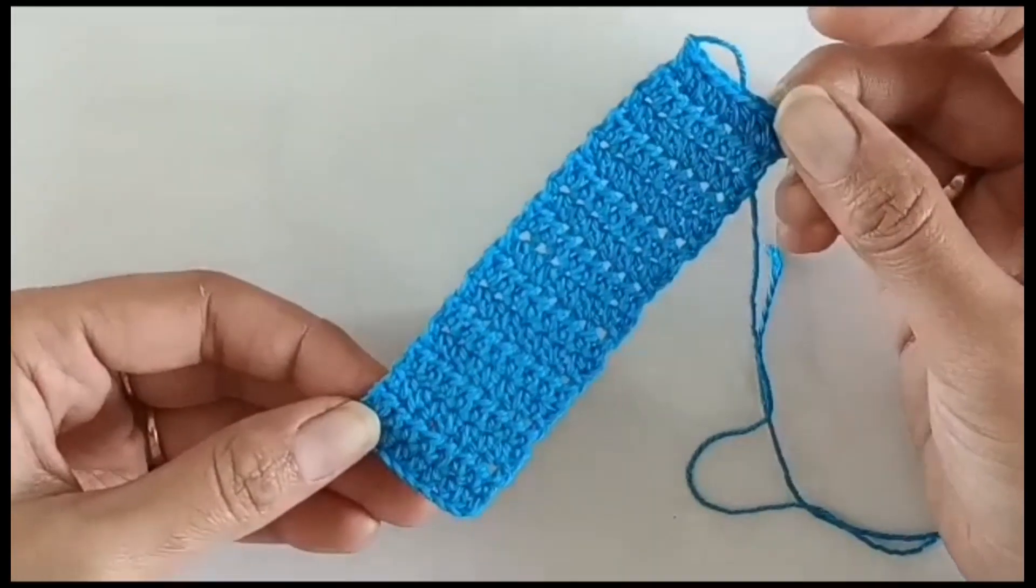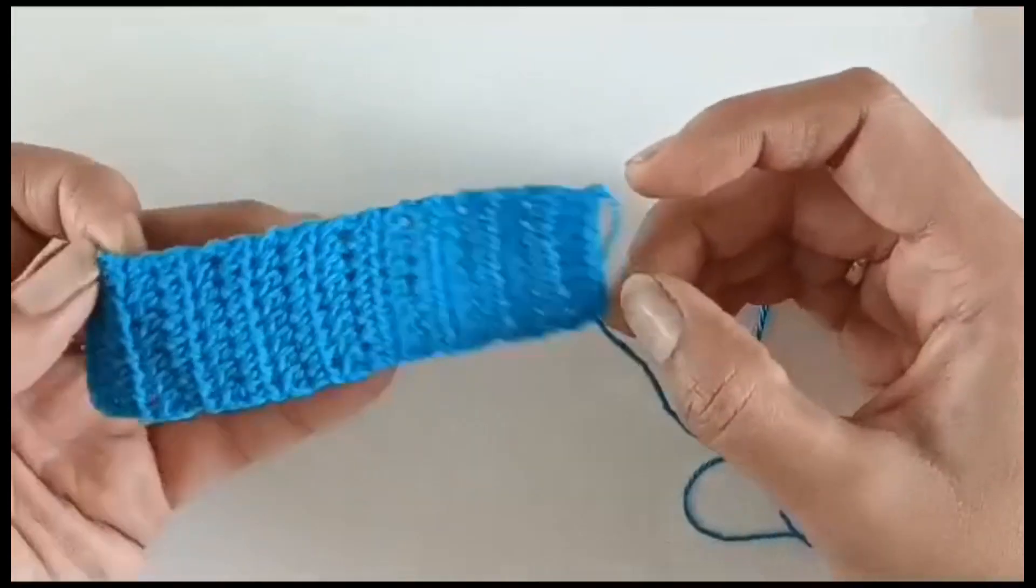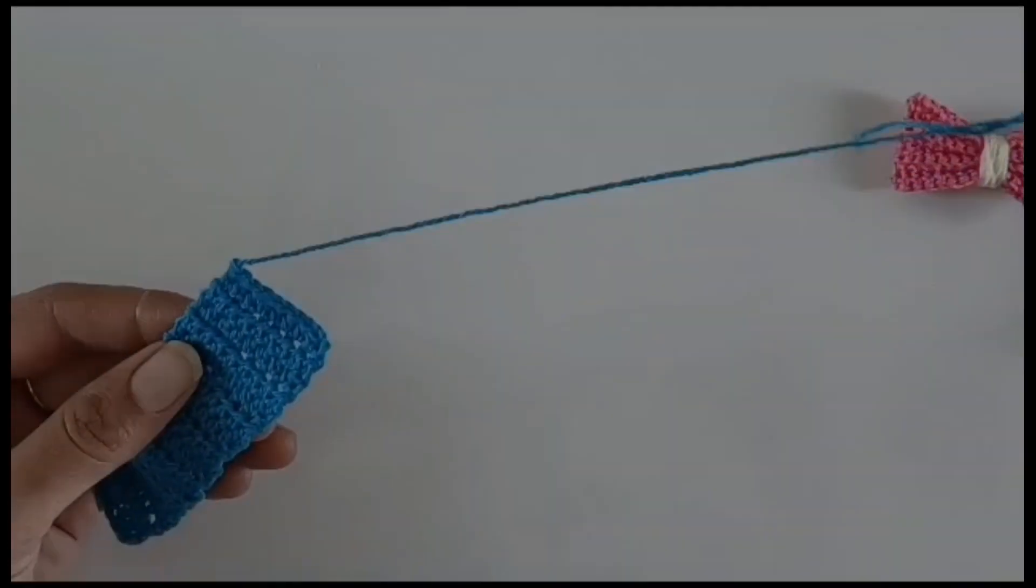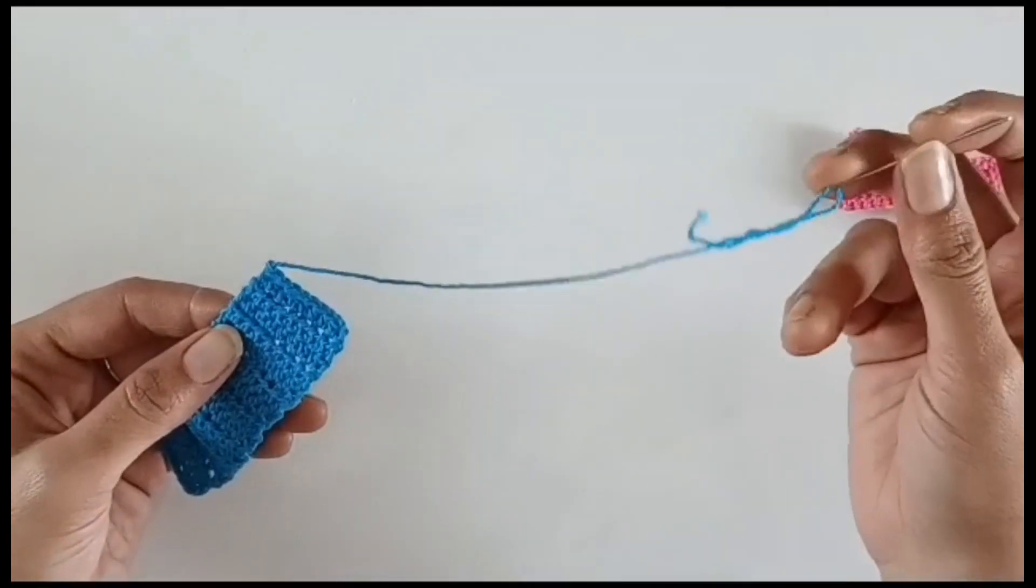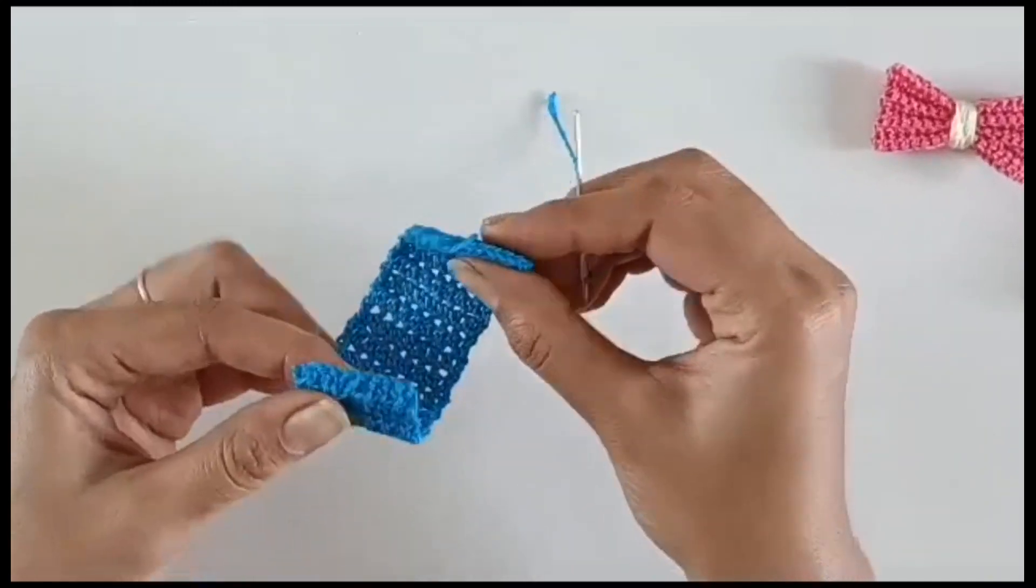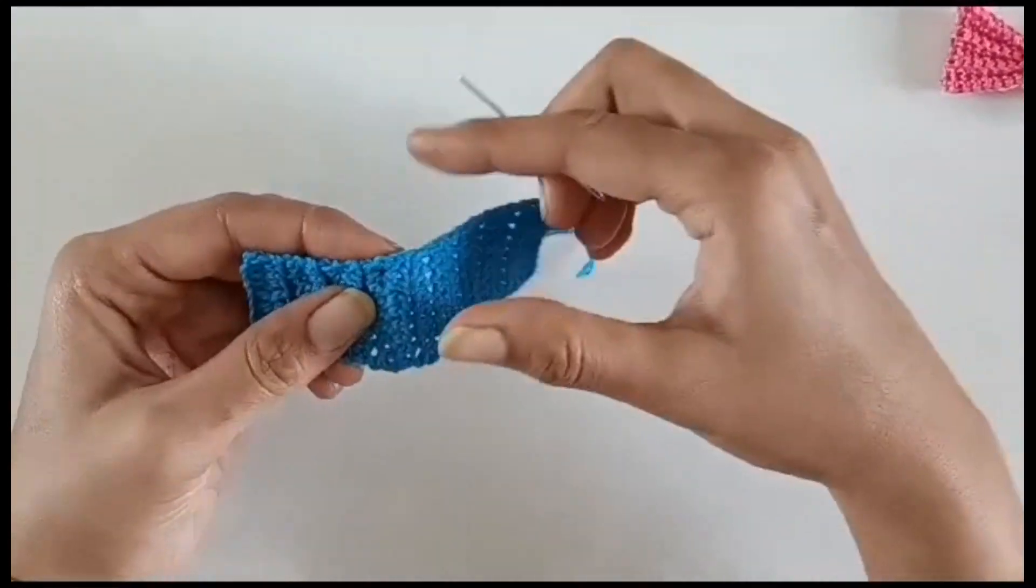So after working the 17 rows as I mentioned earlier, this is the little piece that we have got. I have cut the yarn and left a long tail which can be used for sewing both the edges together as well as for winding up around the bow.